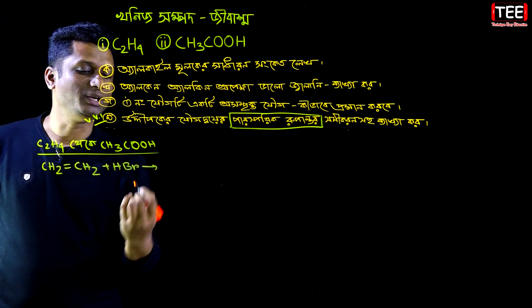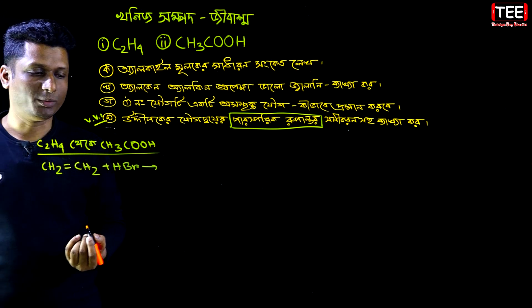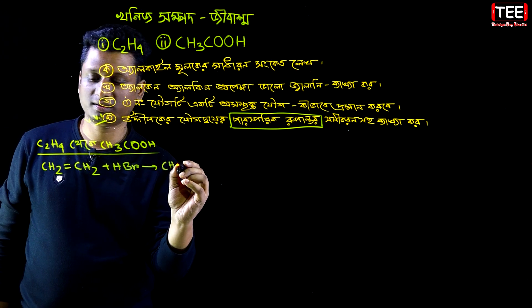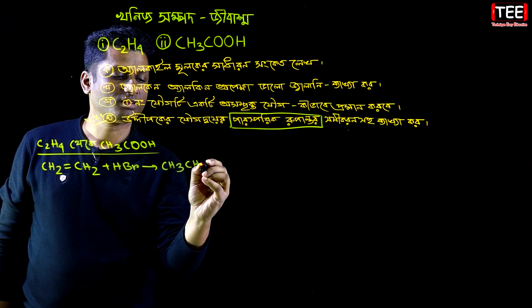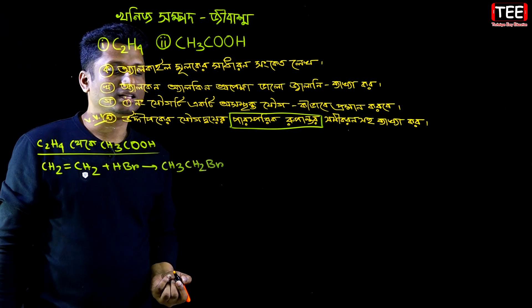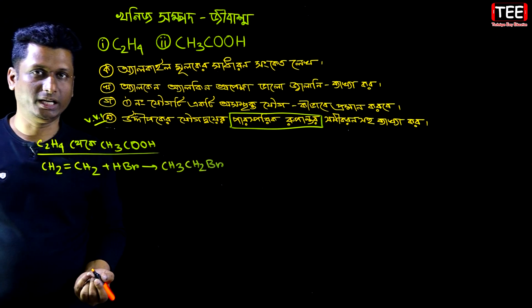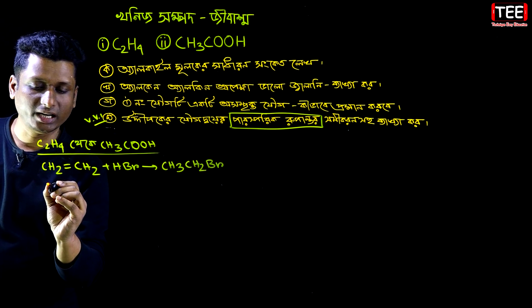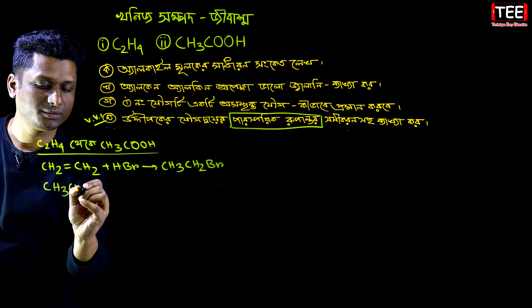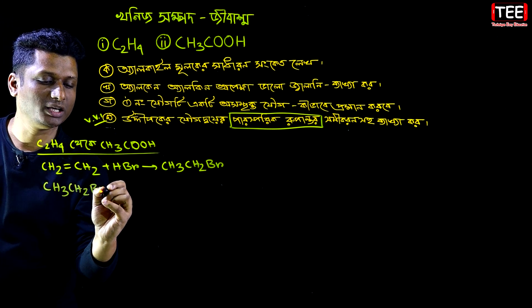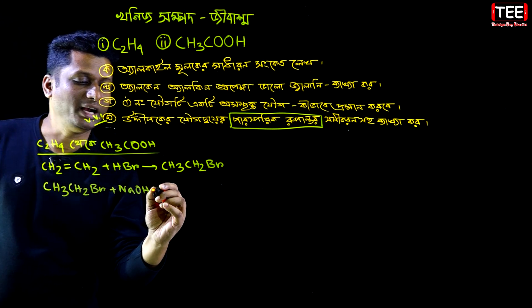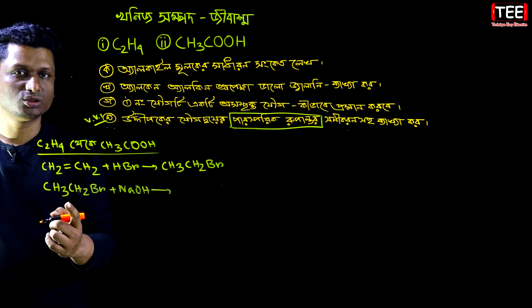HBr, Hydrogen Bromide reacts to give CH₃CH₂Br, Ethyl Bromide. Then, Ethyl Bromide reacts with Sodium Hydroxide (NaOH).